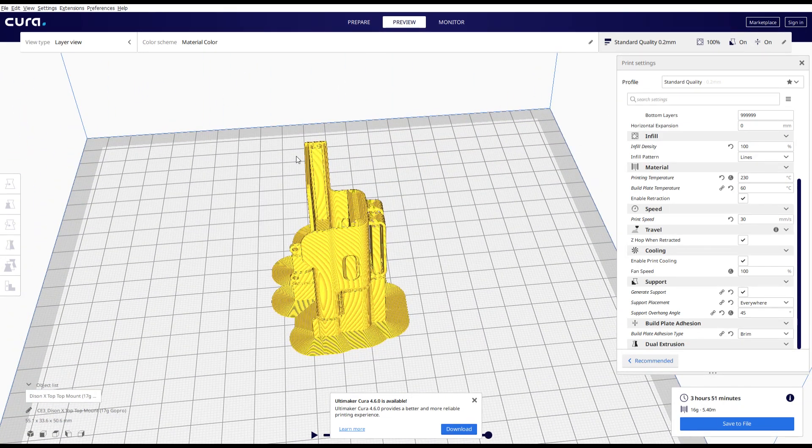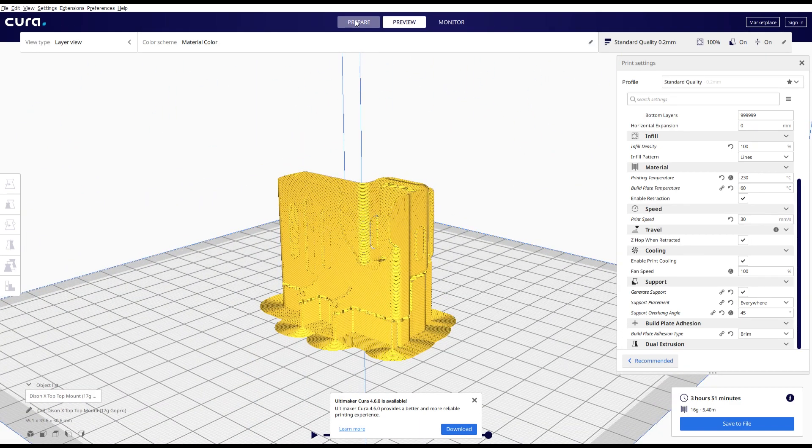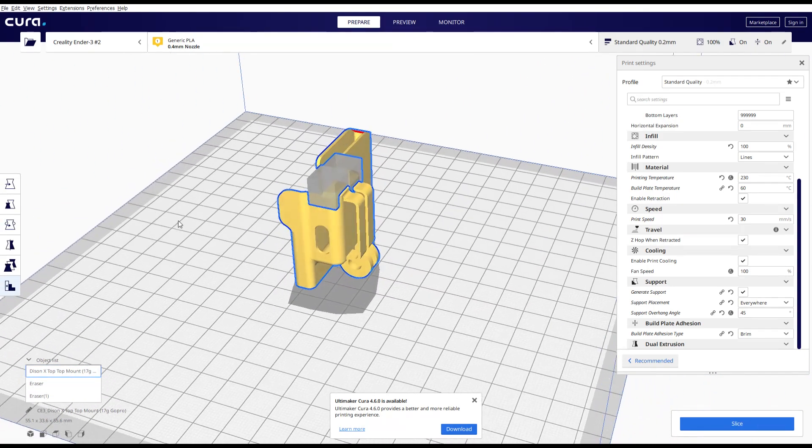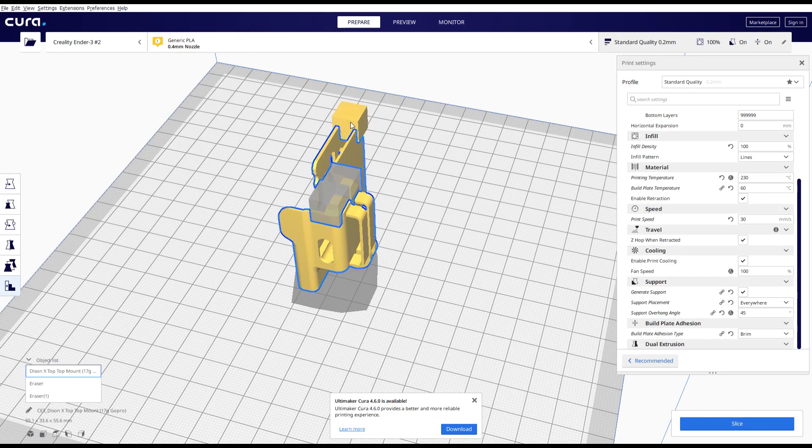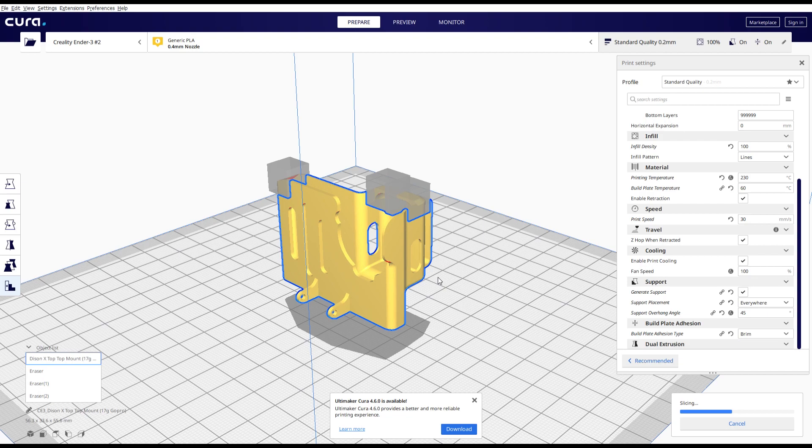We don't want supports there, so what we're gonna do is use a tool called support blocker. You just place those squares where you don't want supports, like in these areas. I don't want supports, I don't need them, they're gonna print just fine. You can see now it's gonna print without supports in that area but supporting the bottom.